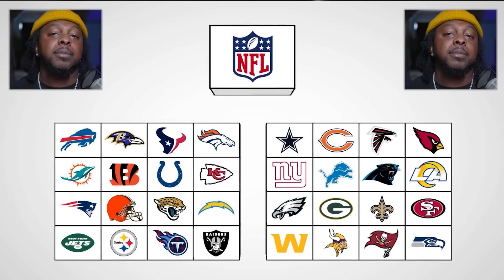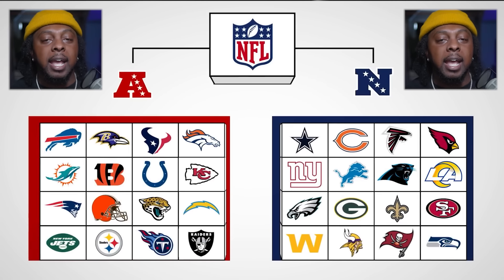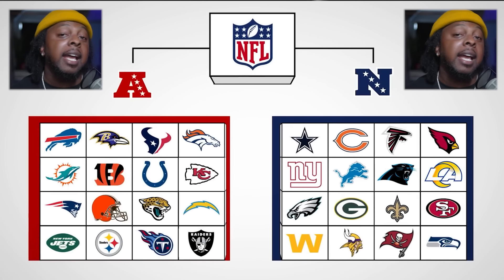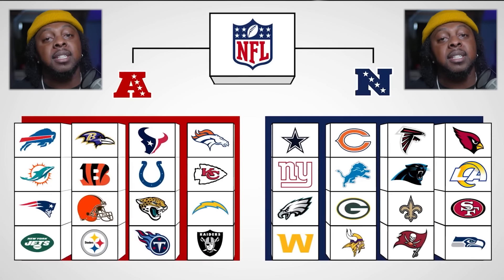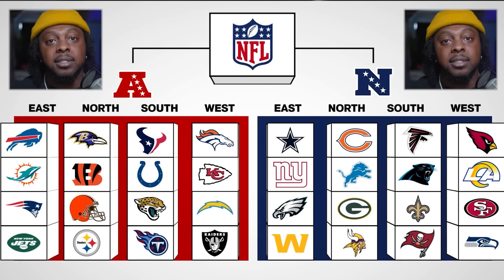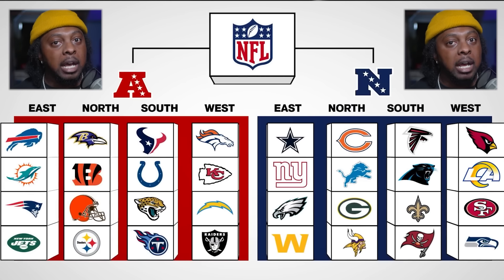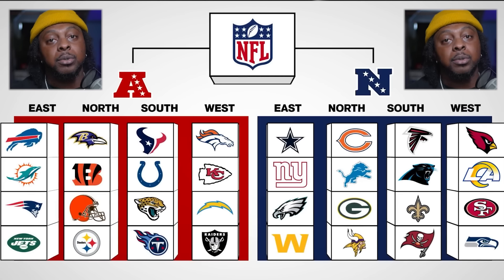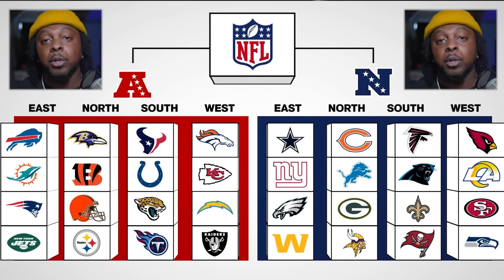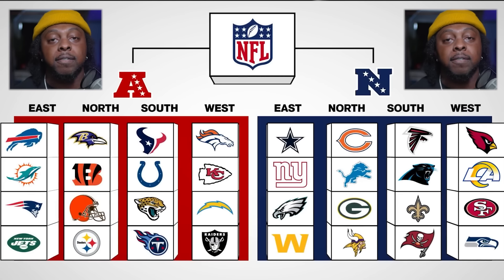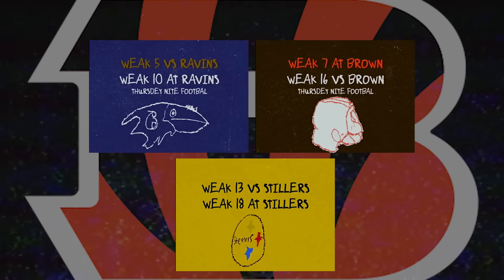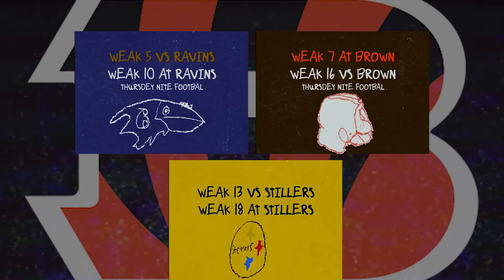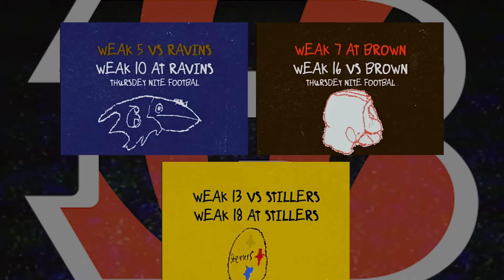The NFL is broken down into two conferences: the AFC and the NFC. Each conference is then broken down into four divisions — North, South, East, and West — and each division consists of four total teams, giving you a grand total of 32 NFL squads.